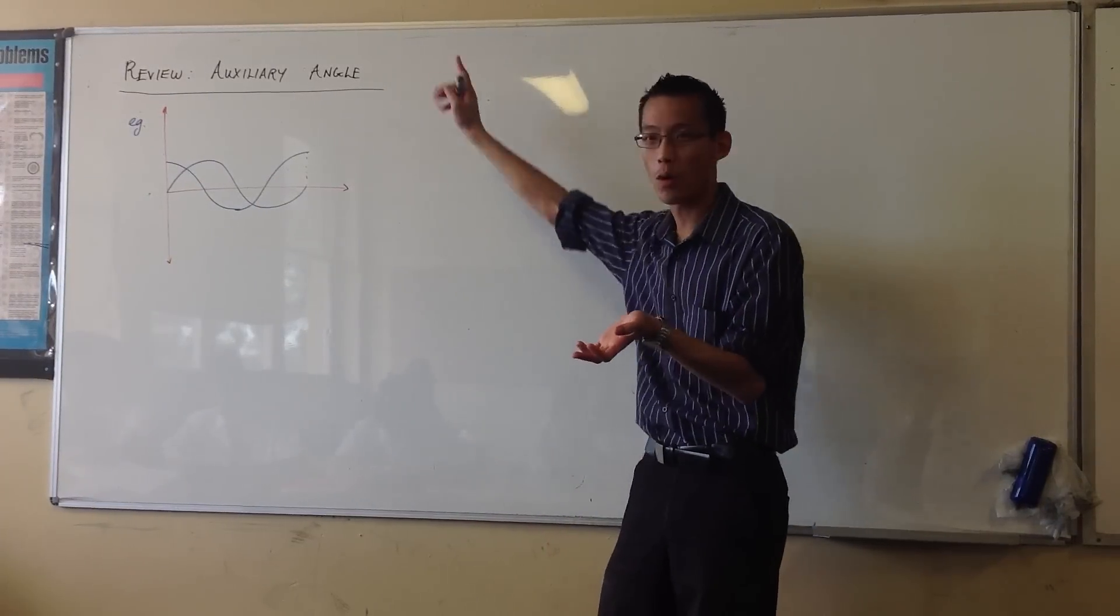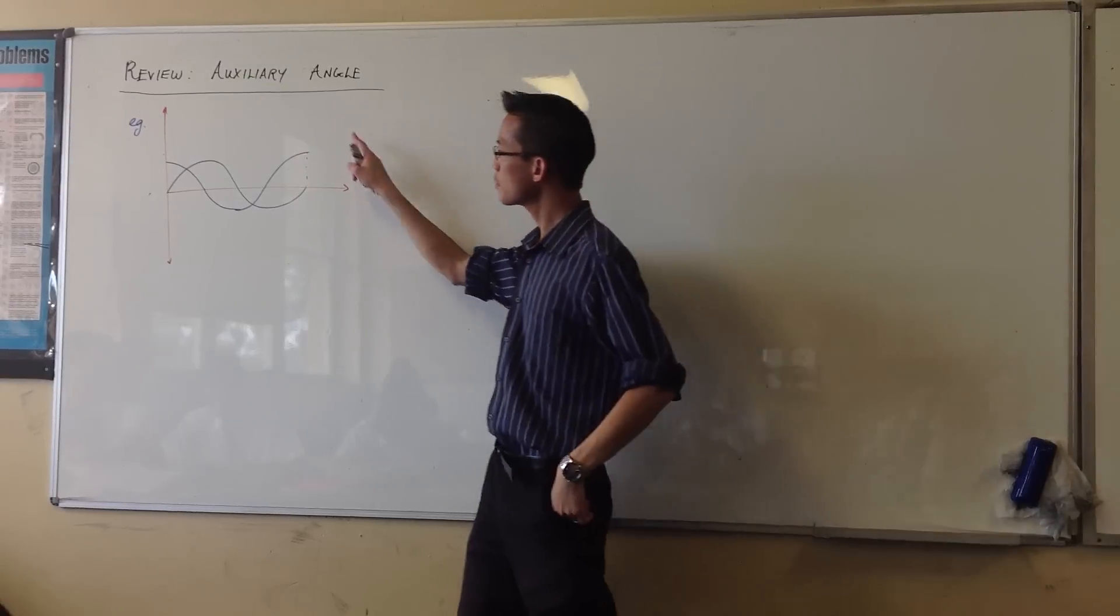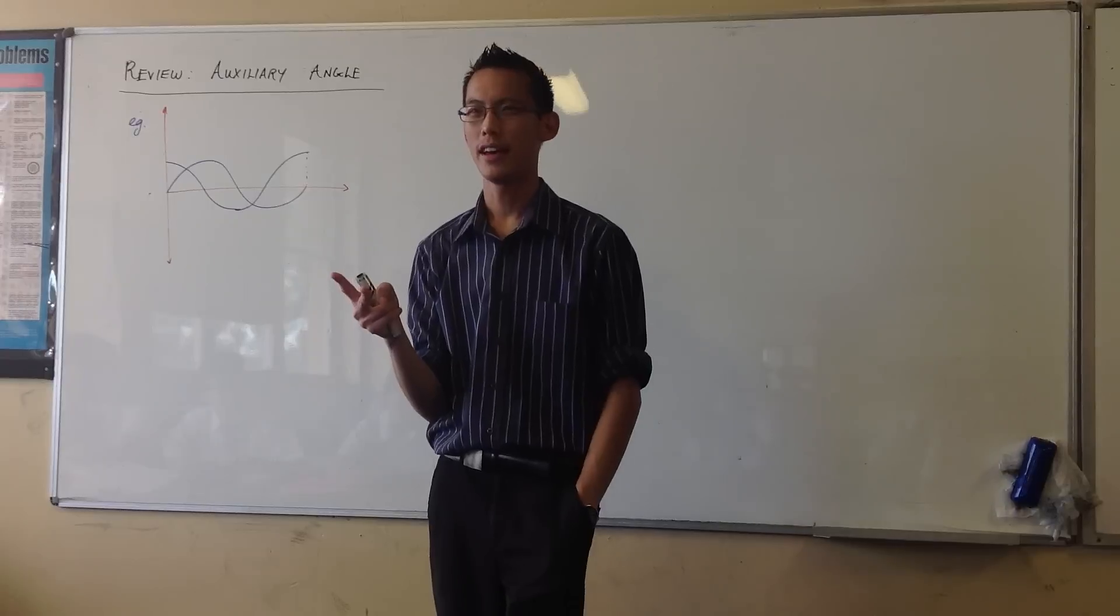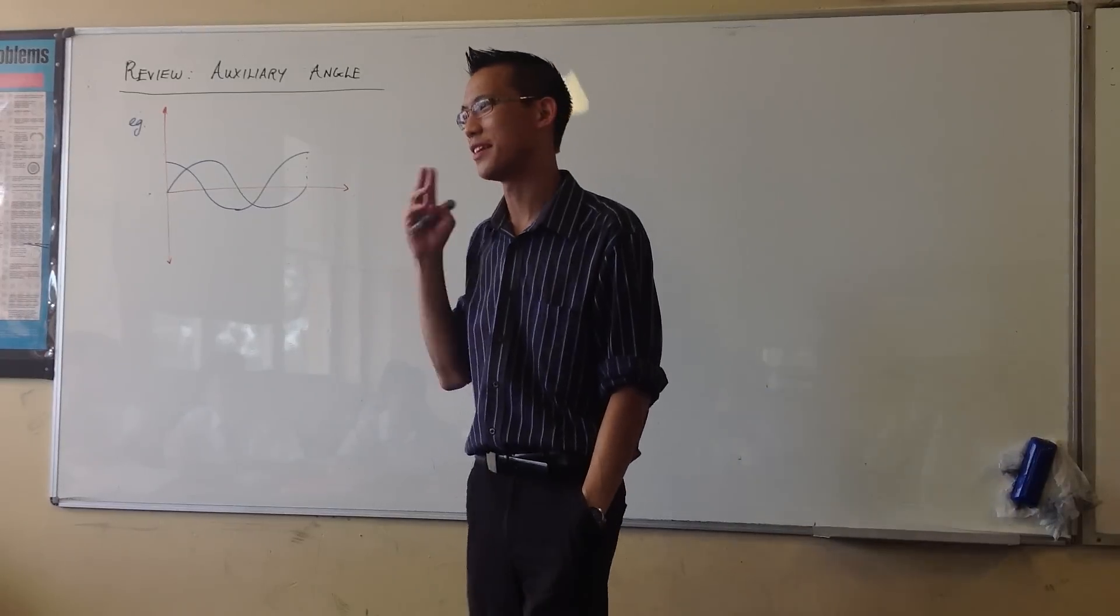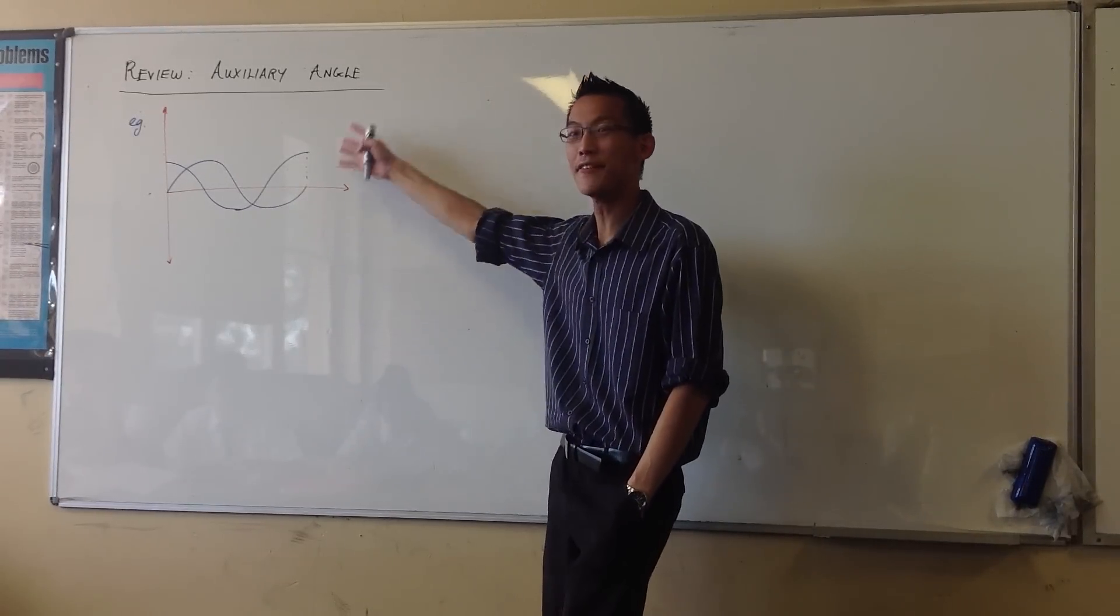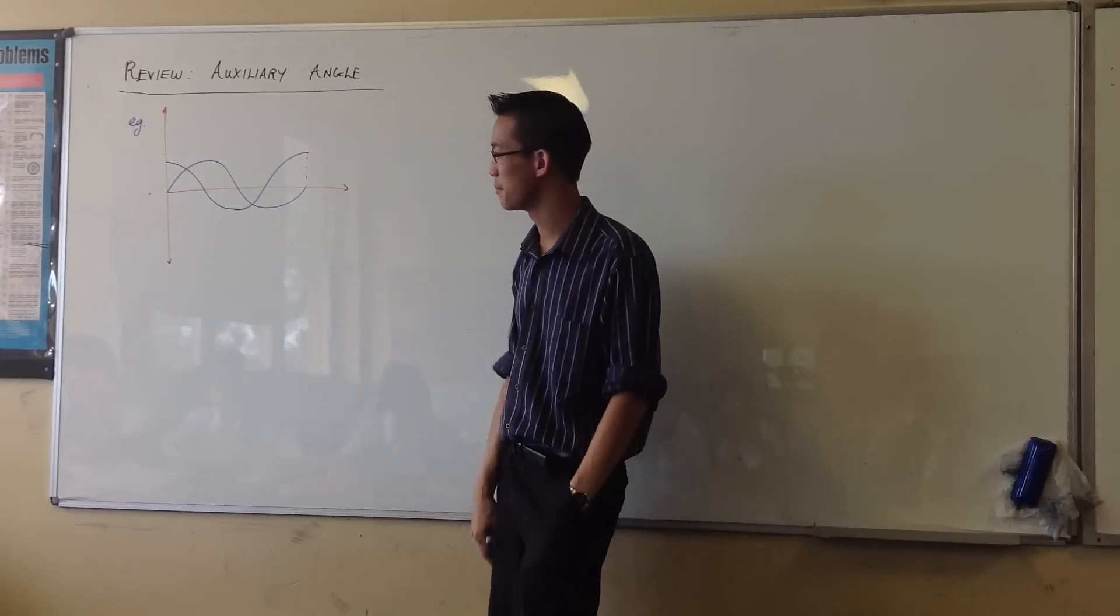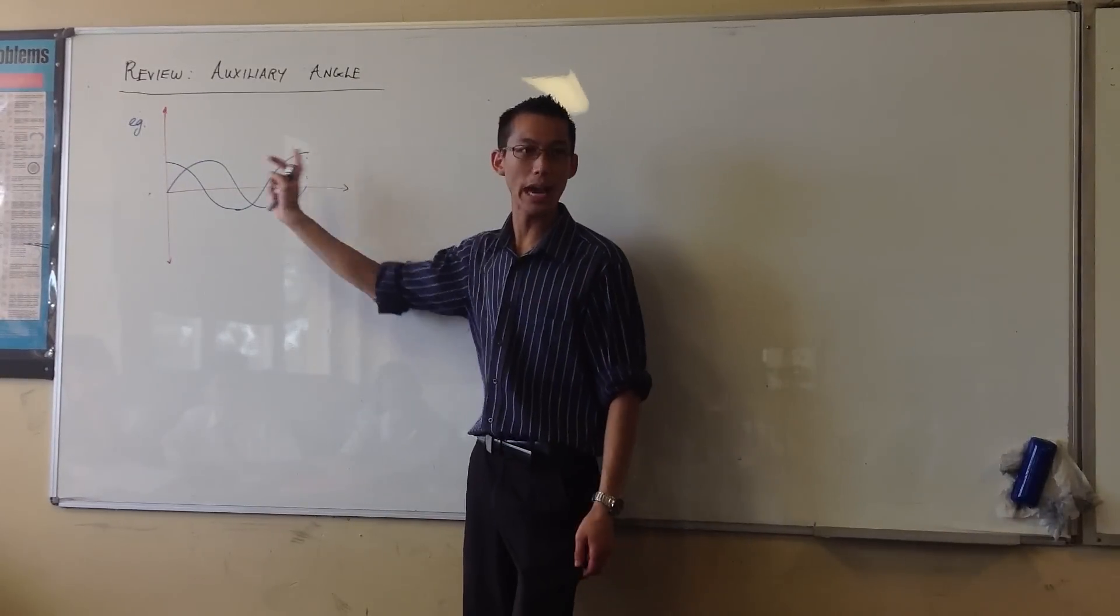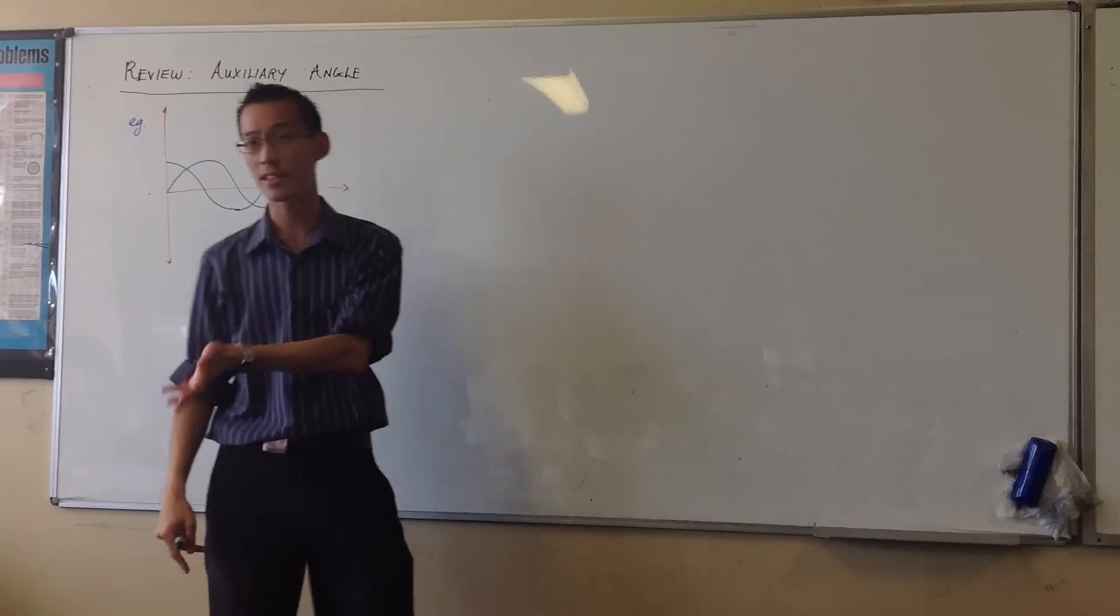So do you remember what the idea was? For auxiliary angle, we said if you've got any two wave functions, actually it's not just two, but I keep saying this—if you're unfortunate enough to do maths at university, you'll discover that you can actually have an infinite series of different kinds of wave functions. You add them all together, and what you'll get, for example, if we took sine and cos, what you'll get is another wave function.